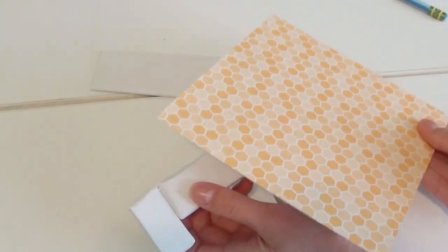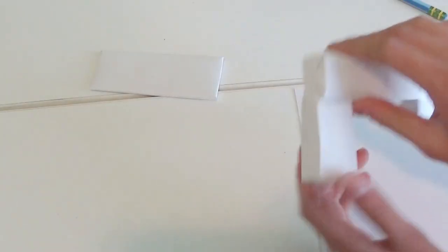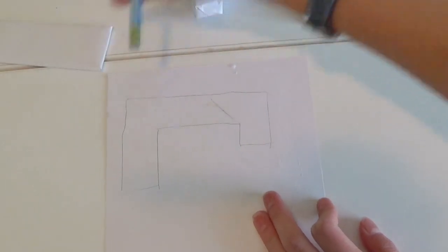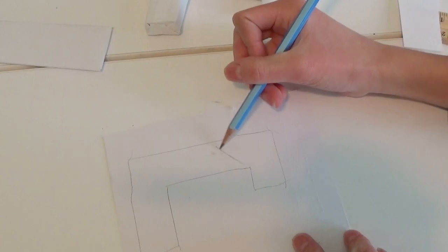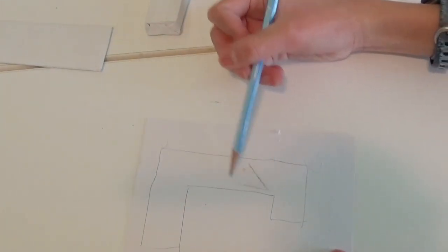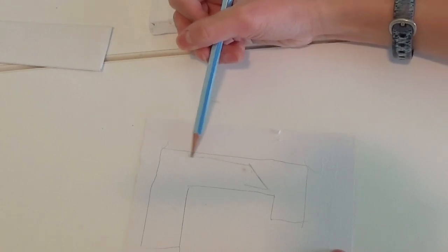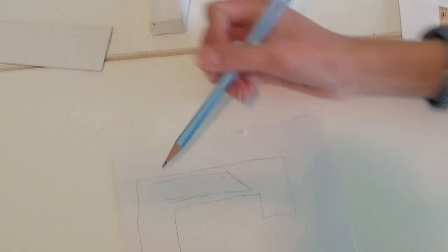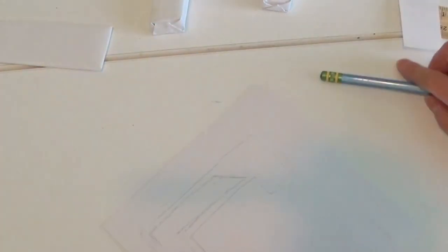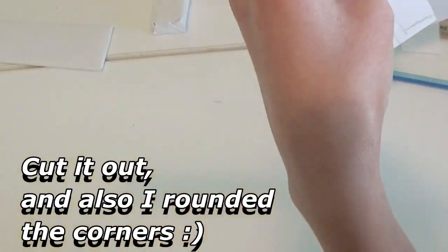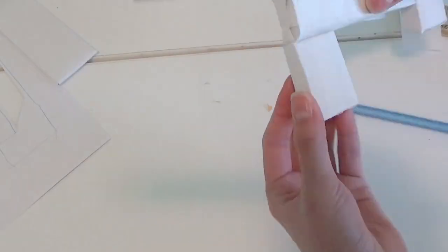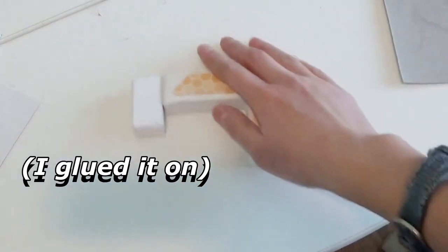Okay, so now grab your decorative paper and on the back, take this and put it on like this. Put it on there and trace around it. And once you have your little piece traced on there, go ahead and just draw a diagonal line like this and kind of just do this.